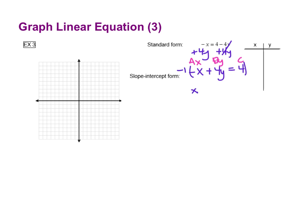That's going to leave you with a positive x, a negative 4y, and a negative 4. So there's our standard form. From that we can do our x and y intercepts. If you remember, we want to make x zero and y zero.